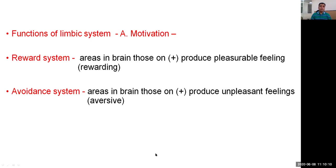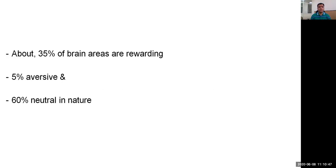Motivation has two basic systems: the reward system and the avoidance system. The reward system refers to areas in the brain which on stimulation produce pleasurable feelings or a feeling of happiness. Exactly opposite to this is the avoidance system — areas which on stimulation produce unpleasant feelings and initiate aversive or avoidance behavior. About 35% of brain areas are rewarding, 5% are aversive, and 60% are neutral in nature.